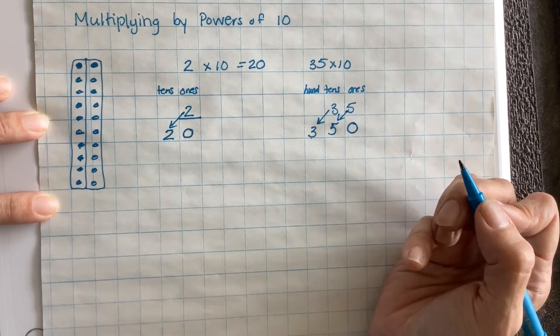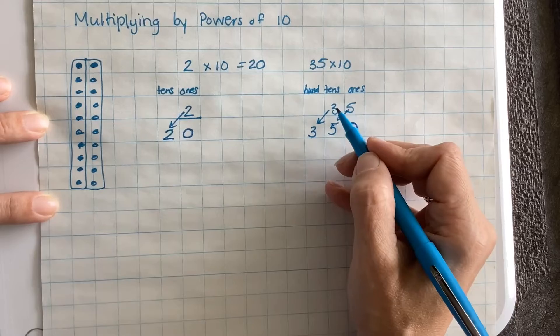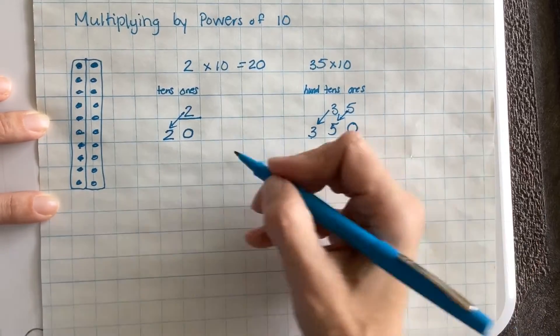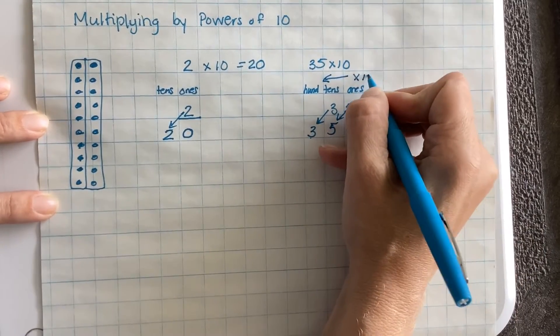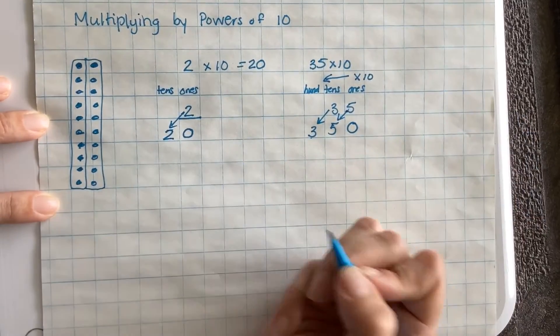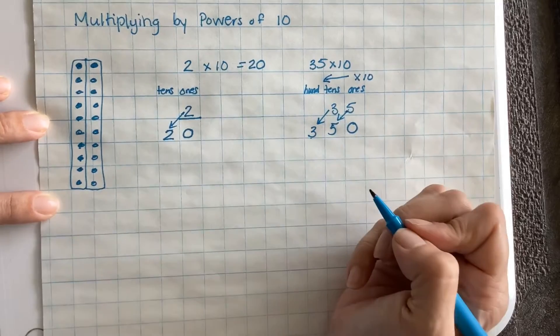So we can see that when we multiply by 10, we shift our numbers in the place value chart to the left. When we multiply by 10, we go one shift, one place value to the left.